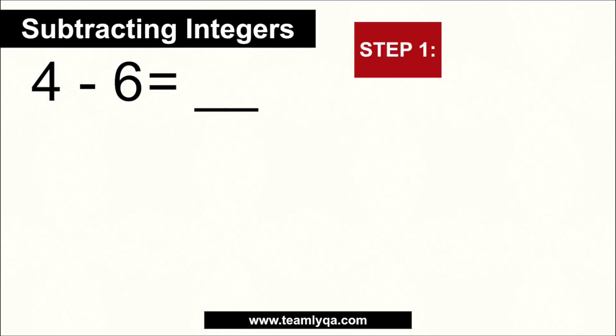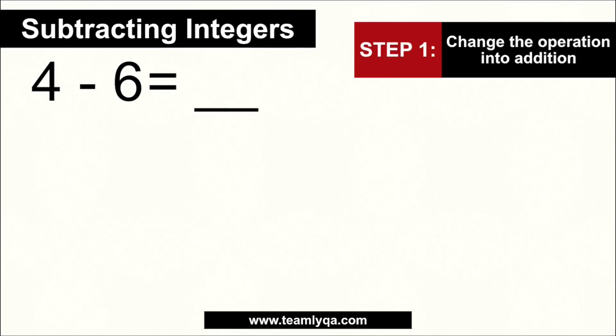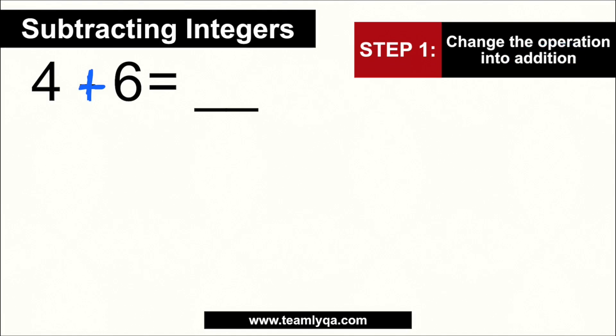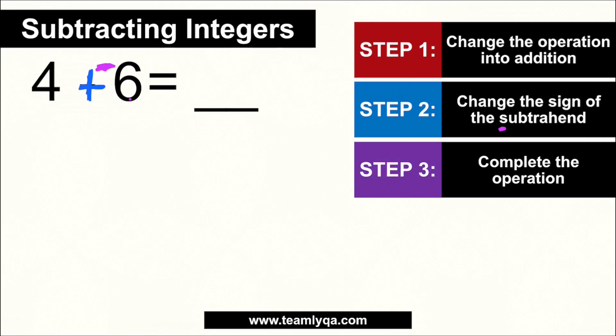When it comes to subtracting integers, step 1: change the operation into addition. So 4 minus 6 becomes 4 plus 6. Step 2: change the sign of the subtrahend. So 6, which was positive, becomes negative — giving us 4 plus negative 6. Now complete the operation: subtract the smaller from the bigger, so 6 minus 4 is 2. Copy the sign of the bigger number, which is negative. The answer is negative 2.